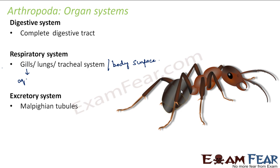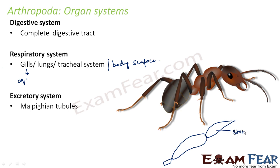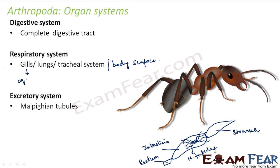For the excretory system, they have Malpighian tubules, which are specialized organs for excretion. They help in removing the waste products from the body. If you look at the structure of the insect, in the upper part you have the stomach, below that is the intestine, and the lowermost portion is the rectum. Somewhere near the intestine you have tube-like structures — these are the Malpighian tubules, which help in excretion. So this is roughly the excretory system of arthropods.